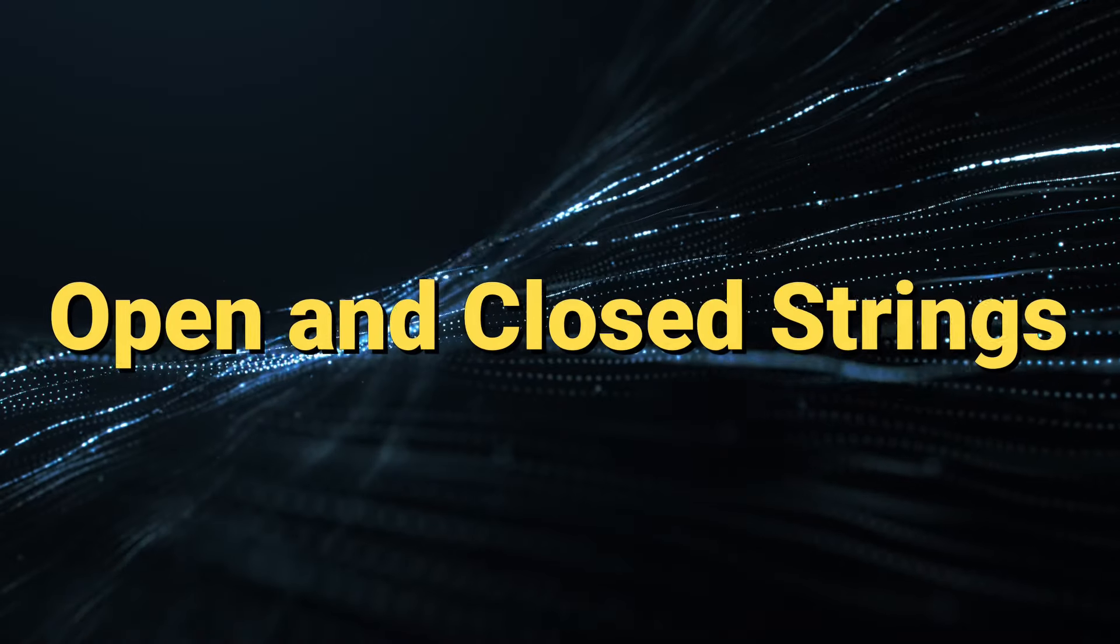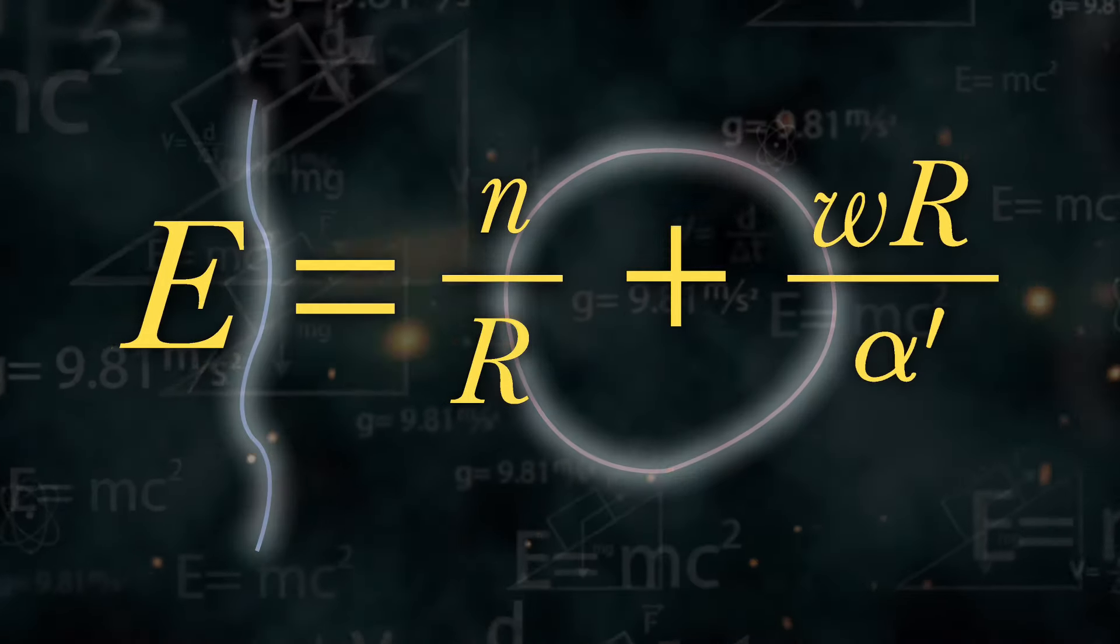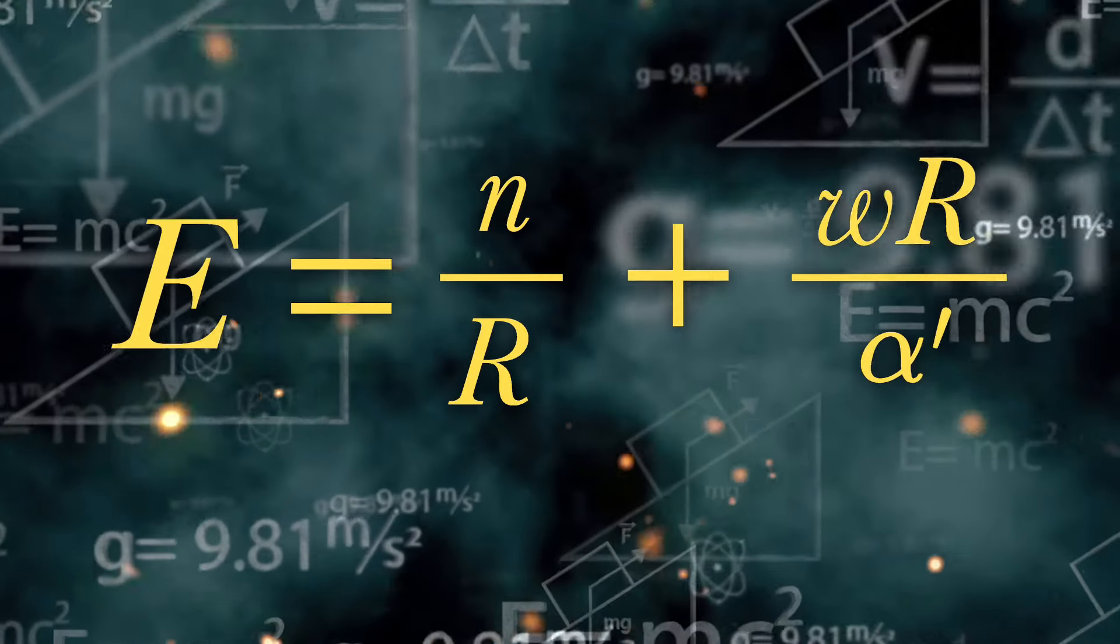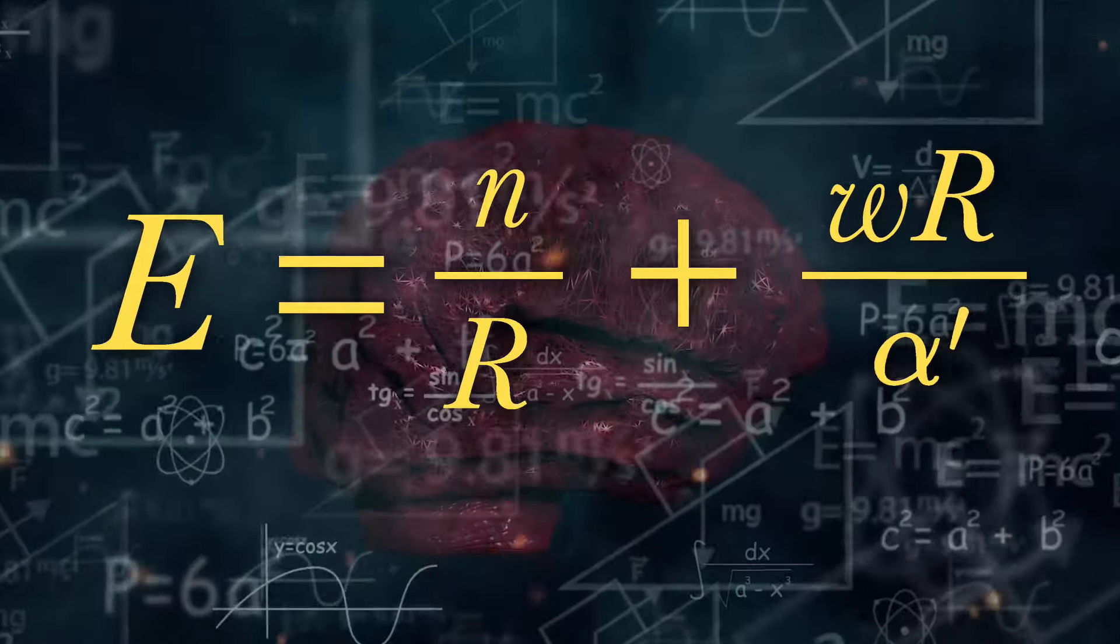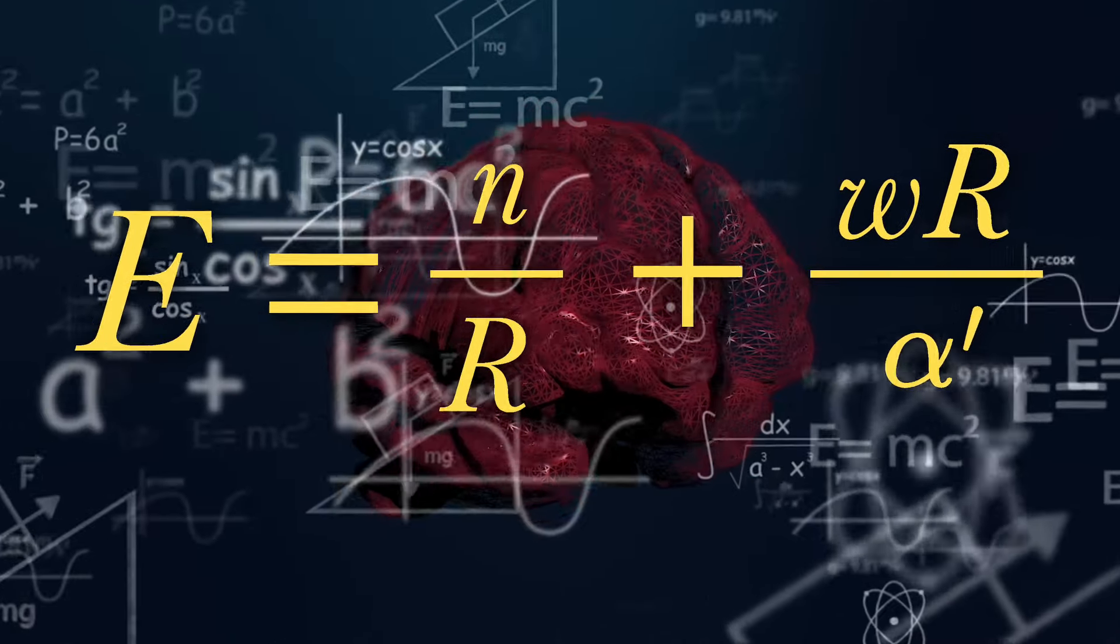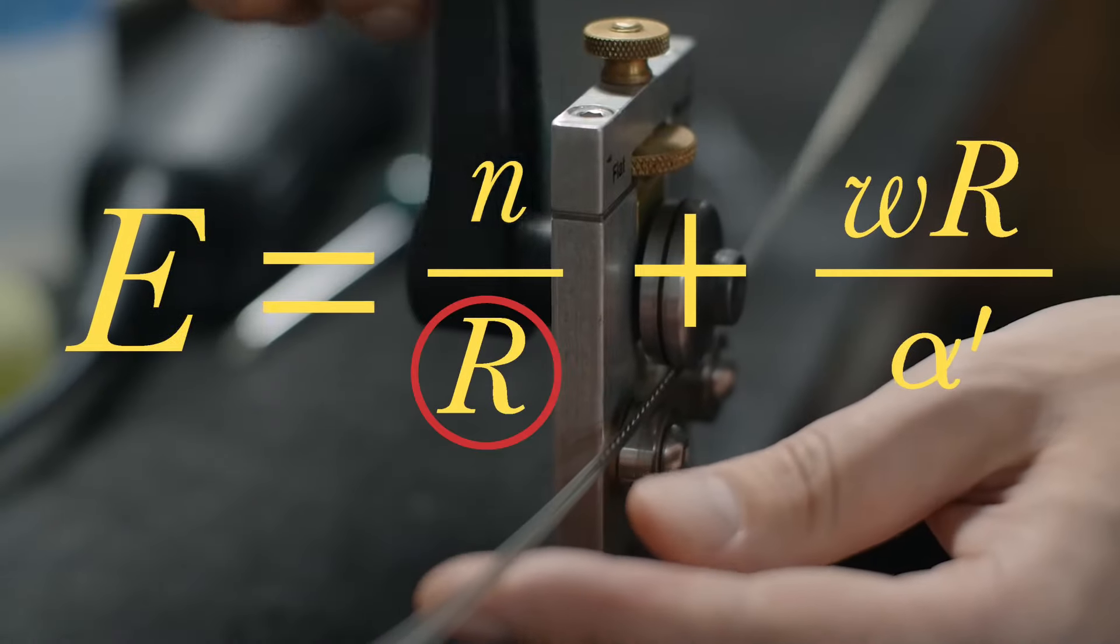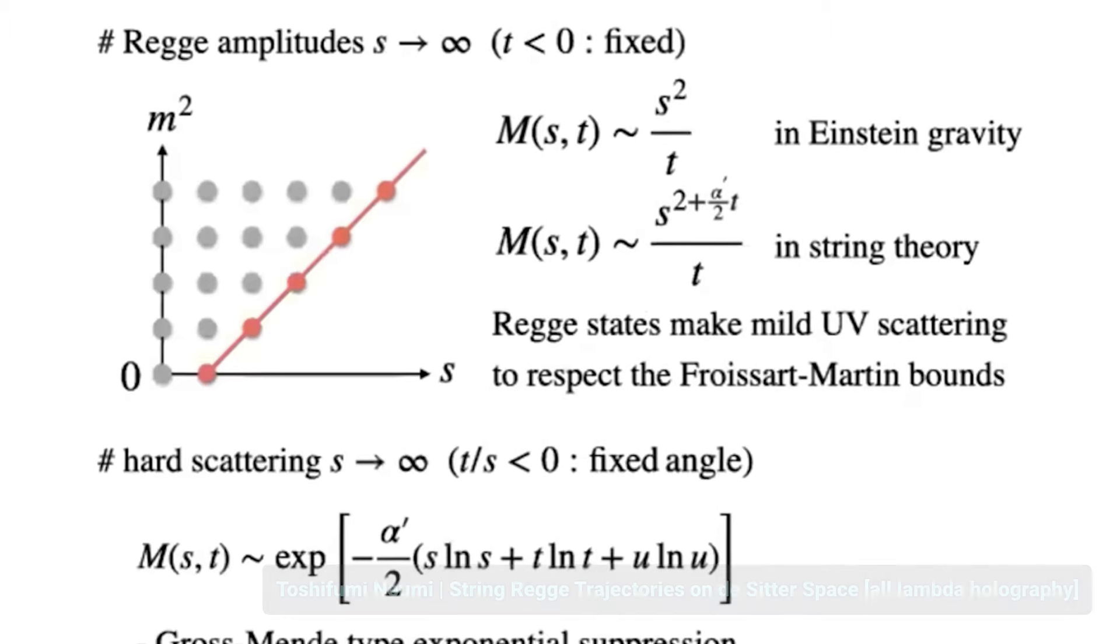Open and closed strings. As mentioned before, there are broadly two types of strings, open strings which have endpoints, and closed strings forming loops. This formula on screen is specific to closed strings and accounts for additional properties such as the winding number W and momentum N in a compactified space. Compactified spaces are something that we'll explore later, so don't worry if this terminology confuses you. R is the compactification radius, and alpha prime is called the regislope. These will come up over and over.